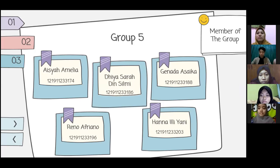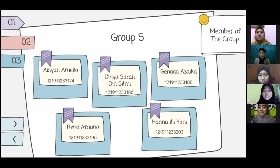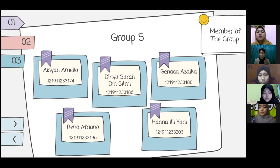There are five members in our group. The first one, we have Aisha Amelia. The second one, we also have Dia Sarah Dinsilmi. The third one, there is Gena Daseka, that means myself. Next, we also have Reno Afriano. And the last one, we also have Hana Ilyani.